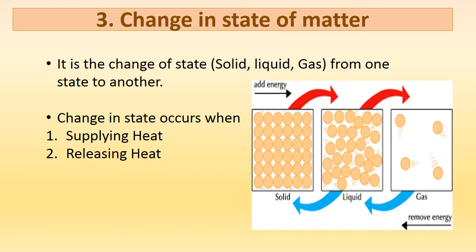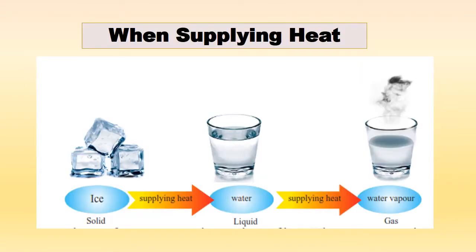For example, a solid becomes a liquid — this is called the change of state of matter. This occurs when we supply heat: a solid can be changed into a liquid, and a liquid can be changed into a gas. Change of state also occurs by releasing heat — removing heat allows a gas to be converted into a liquid, and a liquid into a solid.